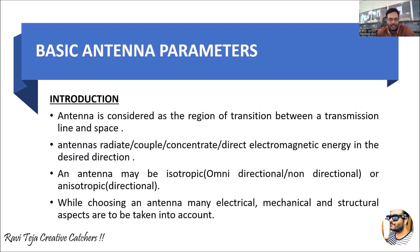An antenna generally radiates, couples, and concentrates electromagnetic energy into a desired direction. Whatever signal it is transmitting into free space can be considered as radiation, coupling, and concentration of electromagnetic energy into a desired direction. That direction can sometimes be several directions. Based on direction, an antenna may be isotropic, which is omnidirectional — a non-directional one — spreading signals widely into several directions.